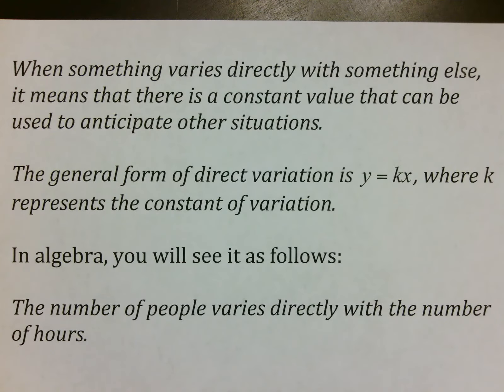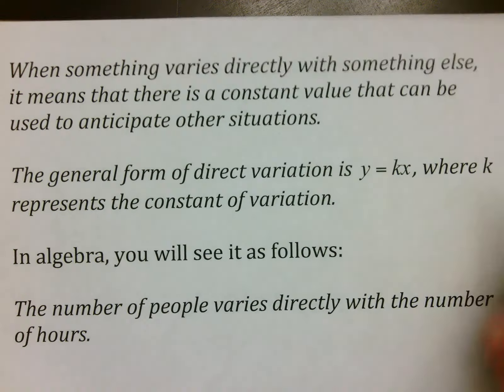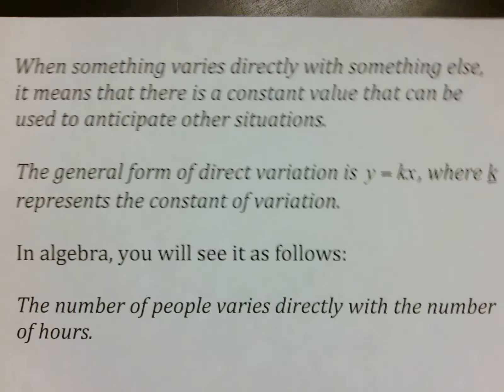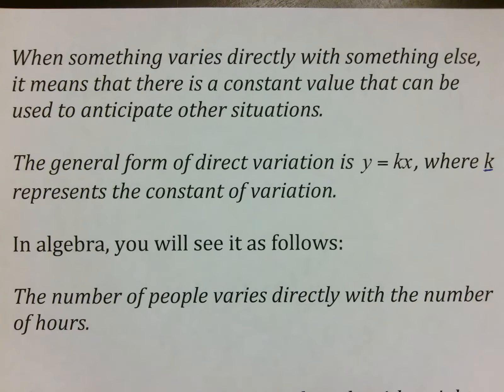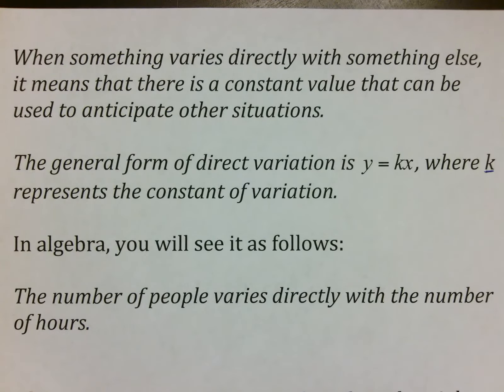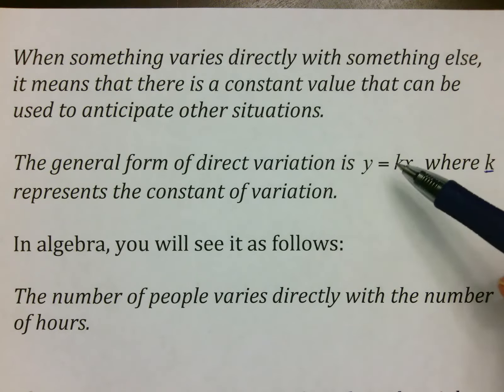When something varies directly with something else, it means that there is a constant value that can be used to anticipate other situations. The general form of direct variation is y equals kx, where k represents what we call the constant of variation. It's kind of like a cheap thing that they use k a lot in math as a constant. I don't know if they want to use k for constant and they can't spell, but k usually represents constant in math. In a certain situation, the number that relates to them is going to be k.